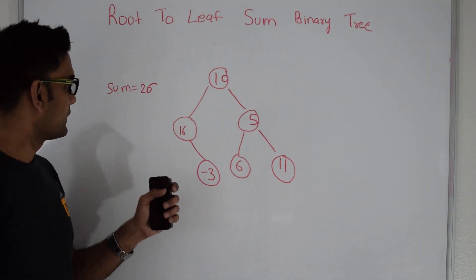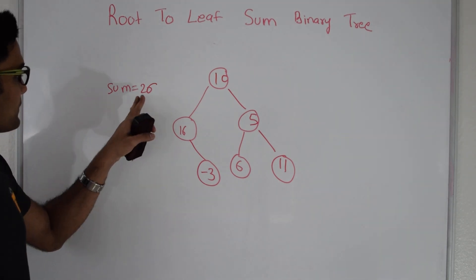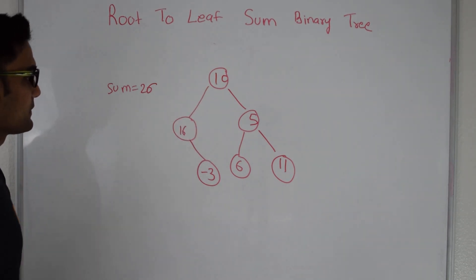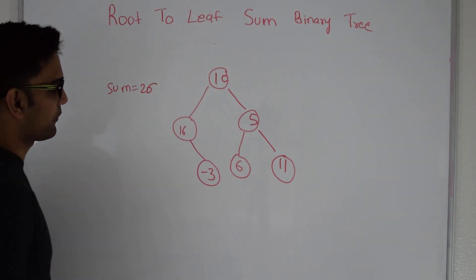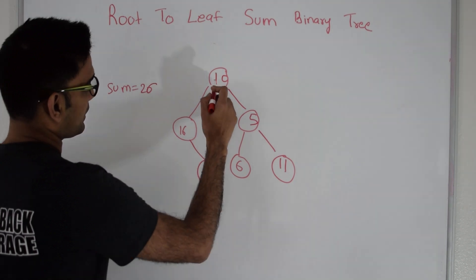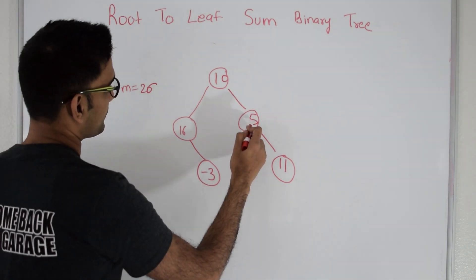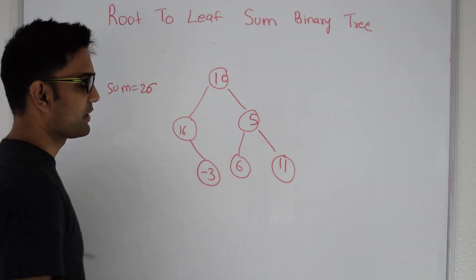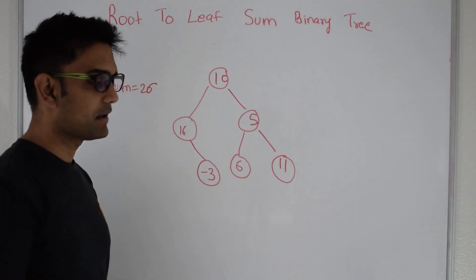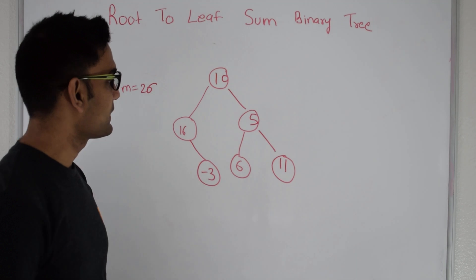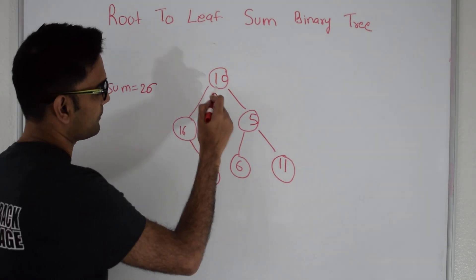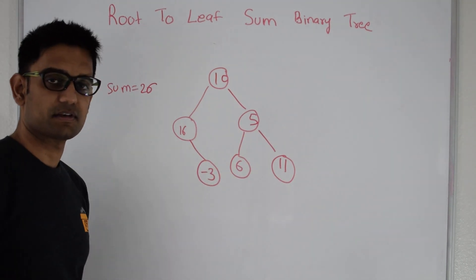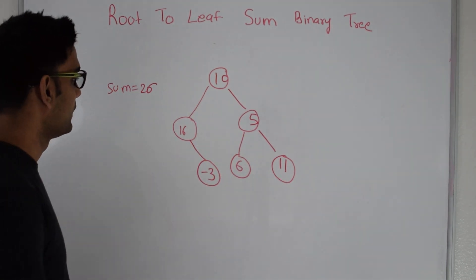For example, if the sum is 26 and we are given a particular tree, 10 plus 5 plus 15, and 15 plus 11 is 26. So this tree should return true for 26, and it should also return the path on which it found this sum.